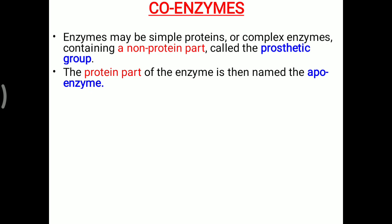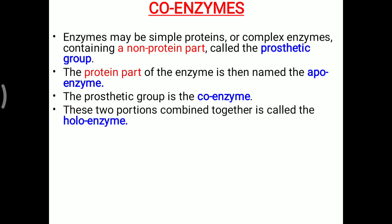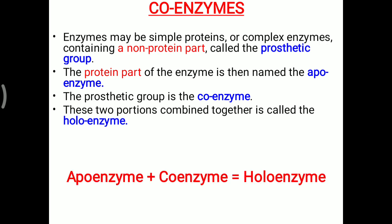The protein part of the enzyme is named the apoenzyme. Apo means the protein part of the enzyme — that is the apoenzyme — while the prosthetic group is considered as the coenzyme. These two portions combined together are called the holoenzyme. So apoenzyme plus coenzyme combine to make a holoenzyme.